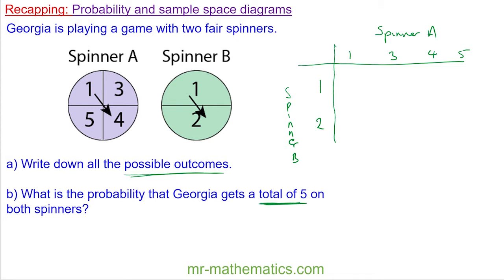A total of five means we're going to add the two numbers on each spinner. A 1 on spinner A and a 1 on spinner B gets you a total of two. A 3 and a 1 gets you a total of four. A 4 and a 1 gets you a total of five. A 5 and a 1 gets you a total of six.